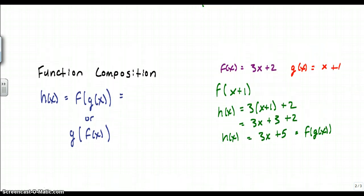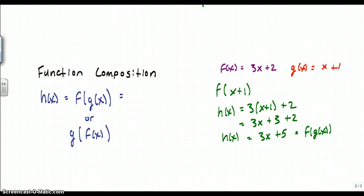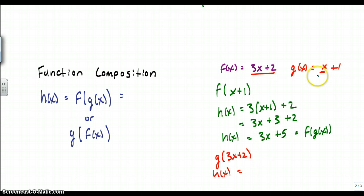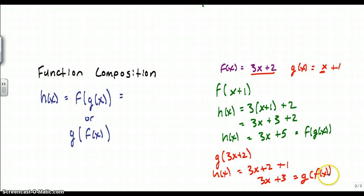Now I can also go the other way and do g of f of x. This means I'm taking the entire function f of x — 3x plus 2 — and plugging that in for every x in my second equation. So h of x equals just 3x plus 2, plus 1, giving 3x plus 3. That is g of f of x. As you can see, you don't get the same answer.